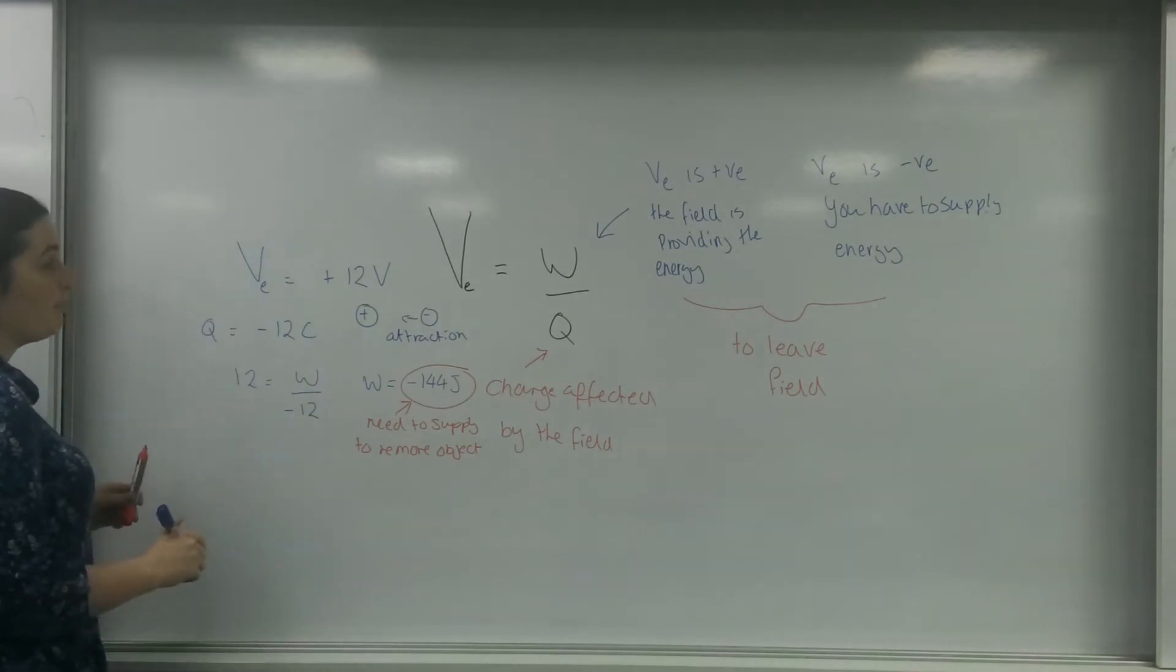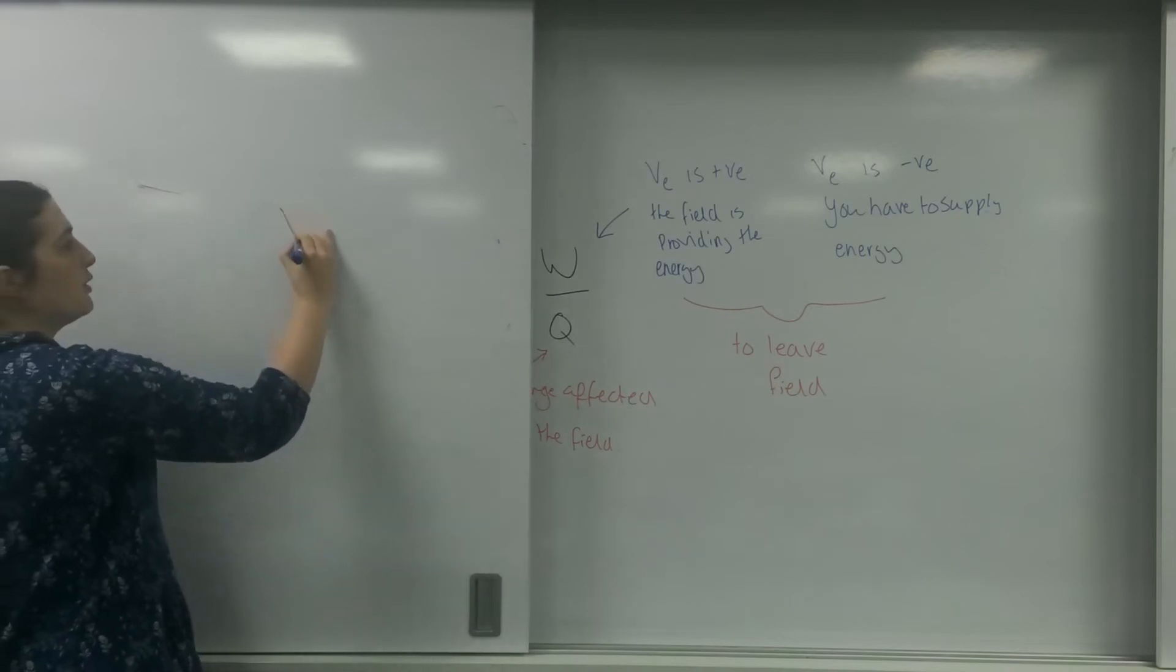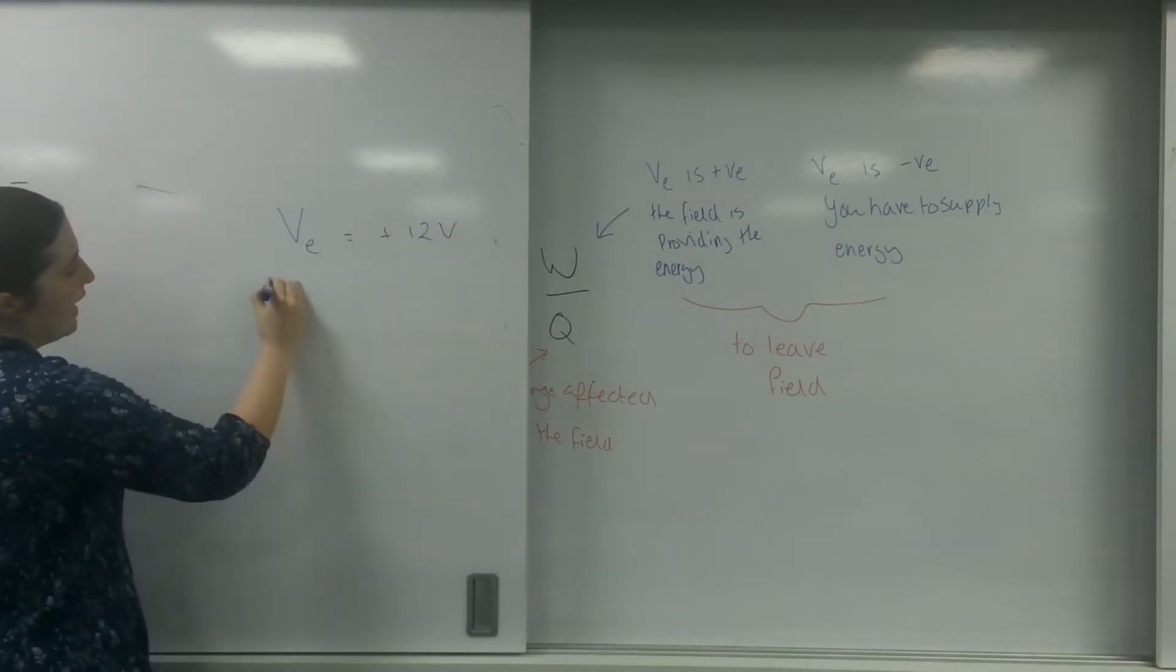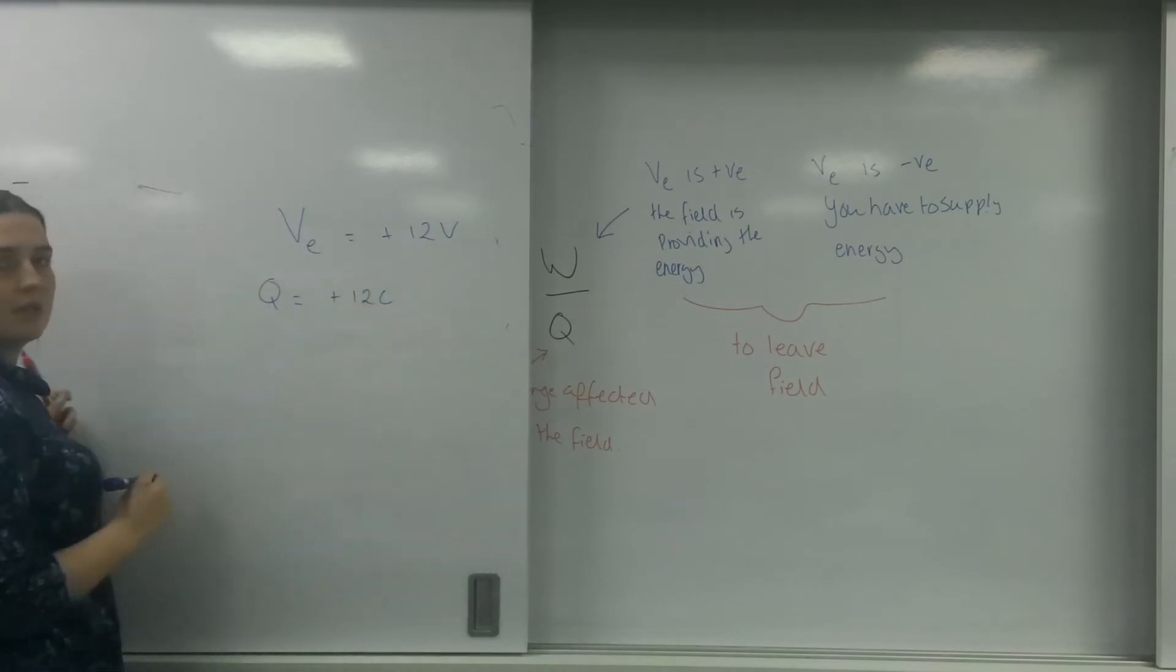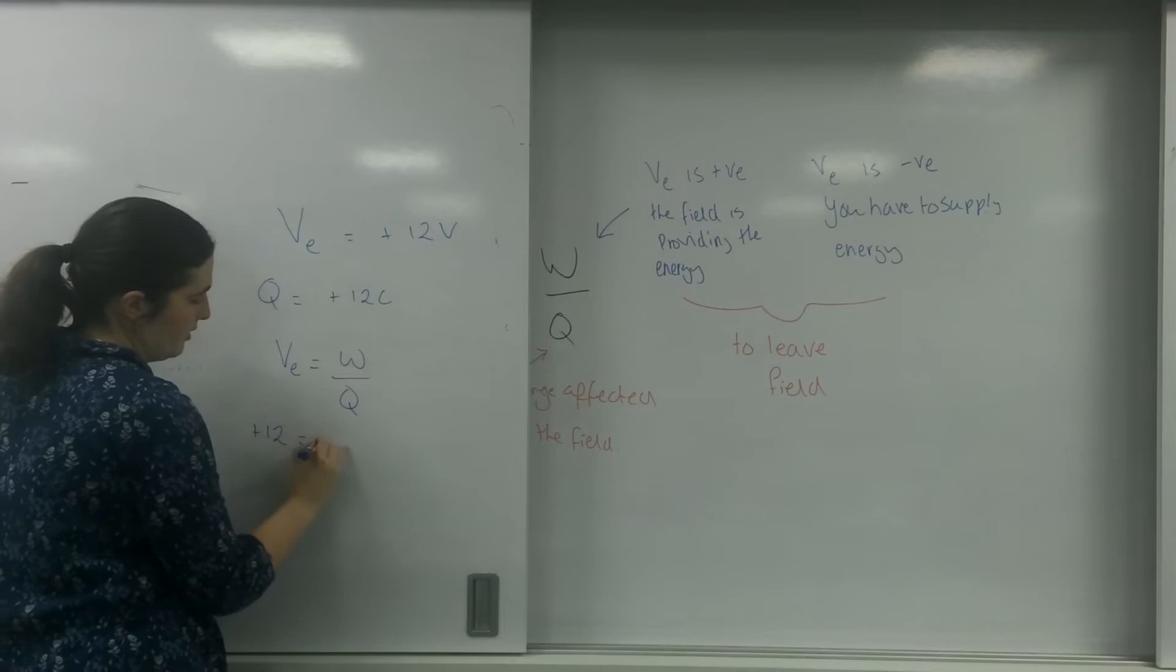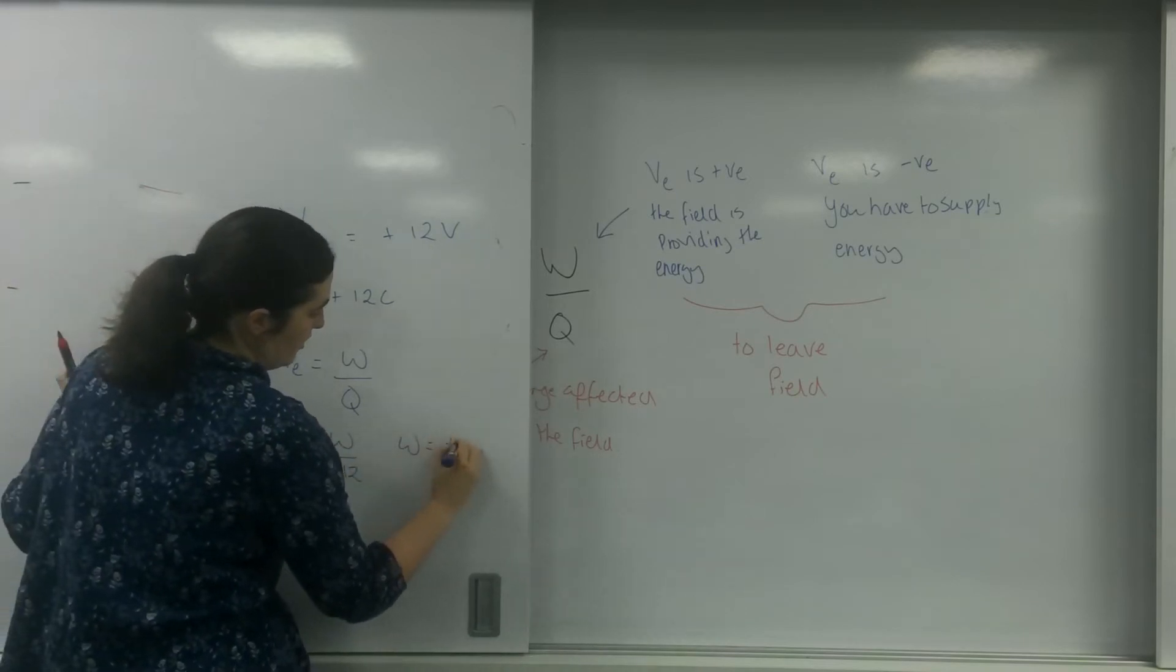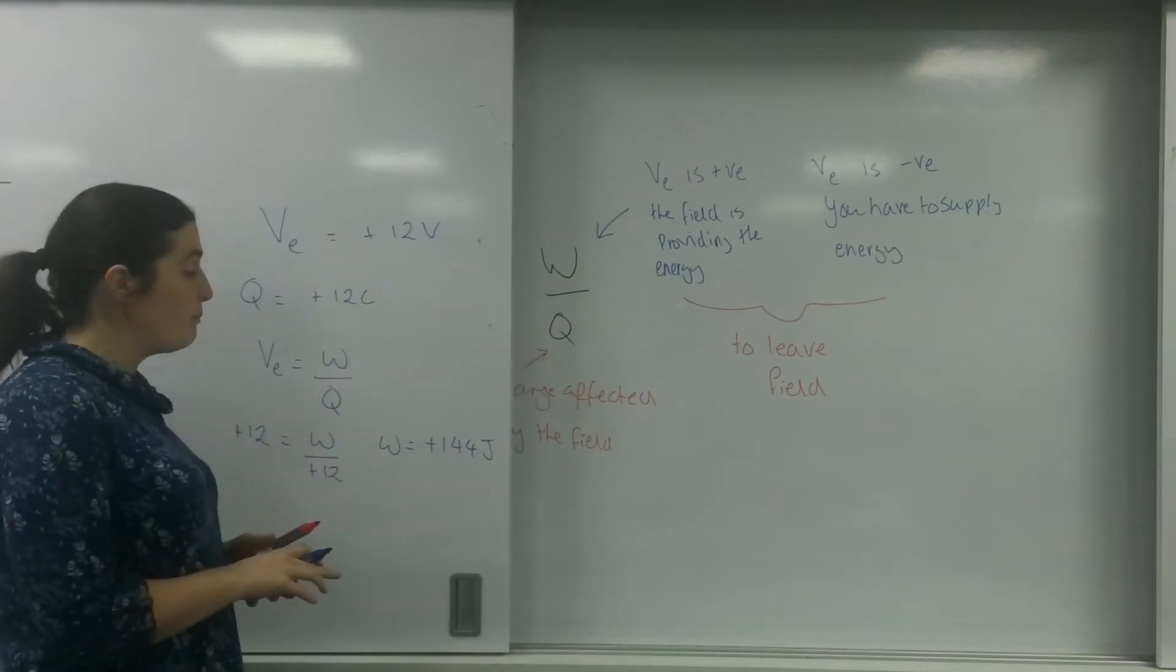Now, if I had a potential, let's just change it a little bit. I have a potential of plus 12 volts at this point, and I have a charge of plus 12 coulombs. So again, using the formula, the energy is a positive number.